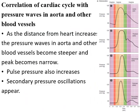Moving on to the correlation of the cardiac cycle with pressure waves in the aorta and other blood vessels, again using the Wiggers diagram. As the distance from the heart increases — from the thoracic aorta to the abdominal aorta to the femoral artery — there is an increase in pulse pressure. Secondary oscillations also appear in arteries far from the heart. The dicrotic notch shifts downward in the incisura phase of the pulse wave. These are the pressure wave changes occurring in the aorta and other blood vessels in relation to the cardiac cycle.